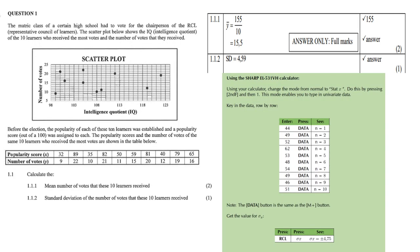So the first question is mean number of votes that these 10 learners receive. Now how do we do that? So you go to the column or the row for number of votes and you add up all those values. 9 plus 22 plus 10 plus 21 plus 11 plus 15 plus 20 plus 12 plus 19 plus 16 and you should get 155. Then you divide it by 10 learners. So therefore the answer is 15.5.